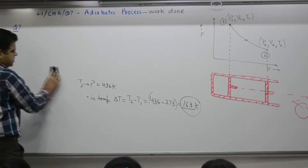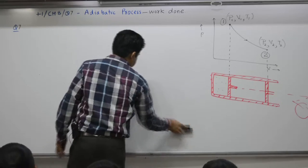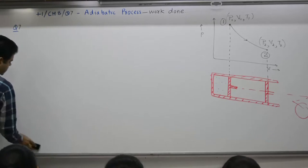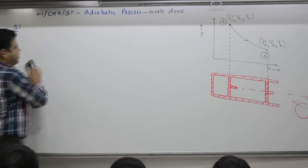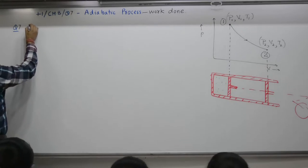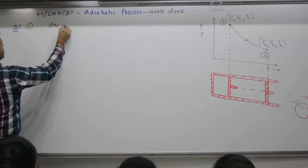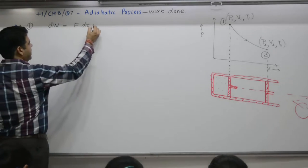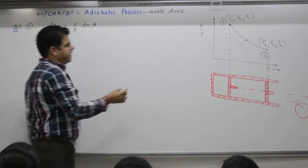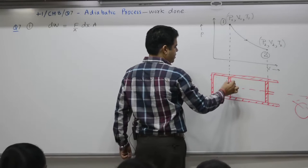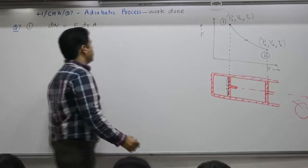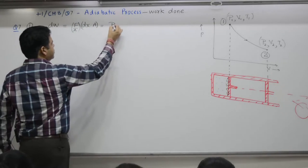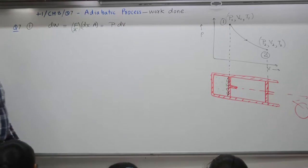Work done in adiabatic process. Small mode of work done is F·dx. Multiply and divide by area. Area of this piston A, then A·dx gives small volume. Force per unit area gives pressure. So it is P·dV. Small work done is P·dV.